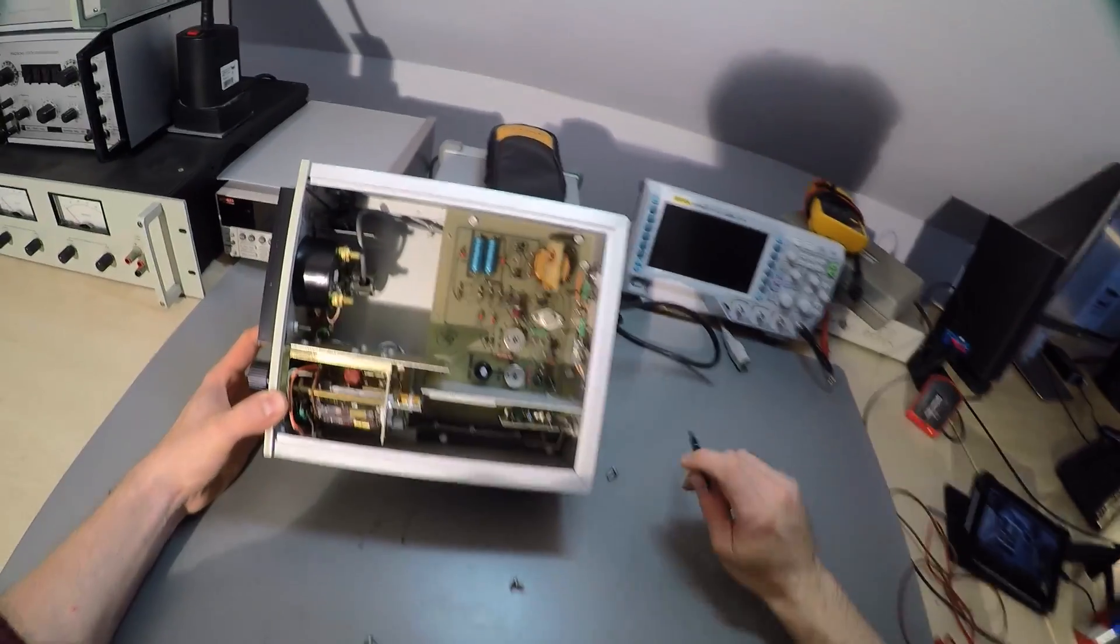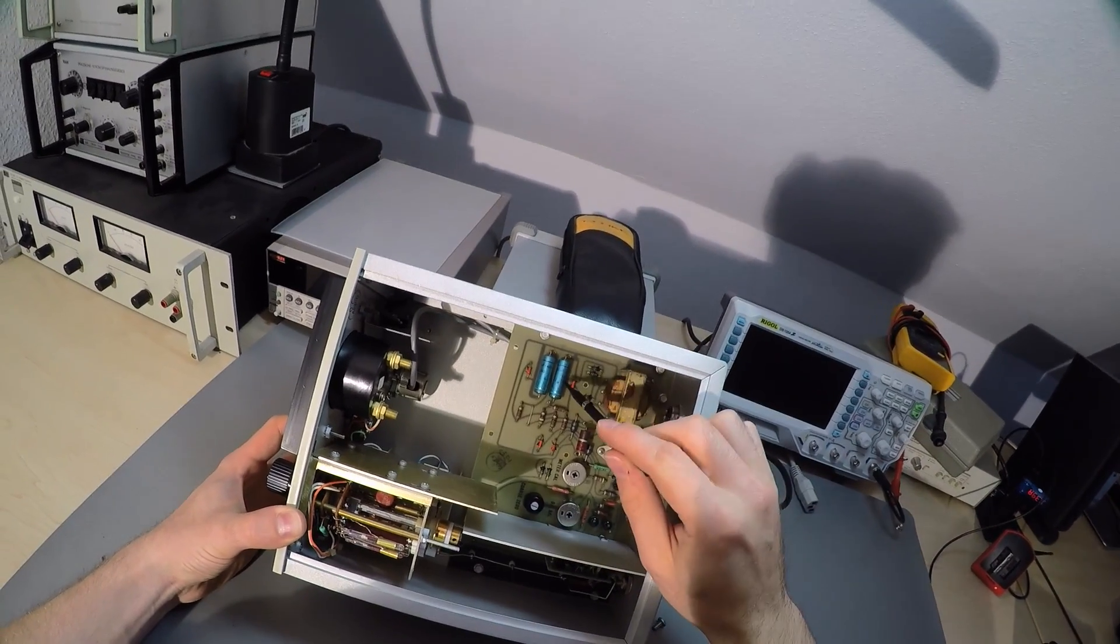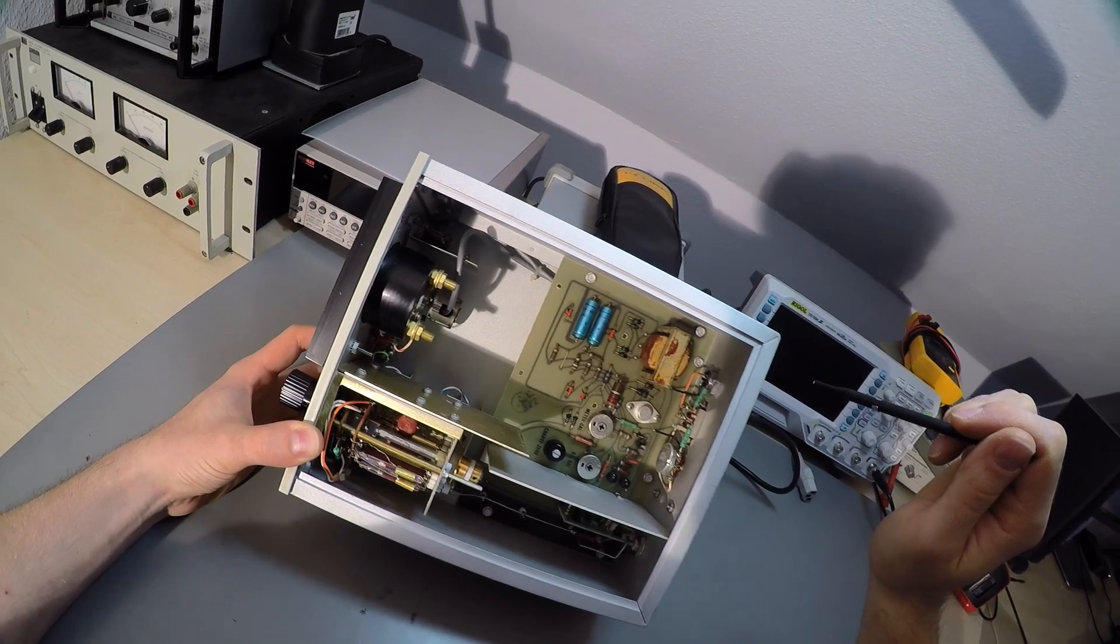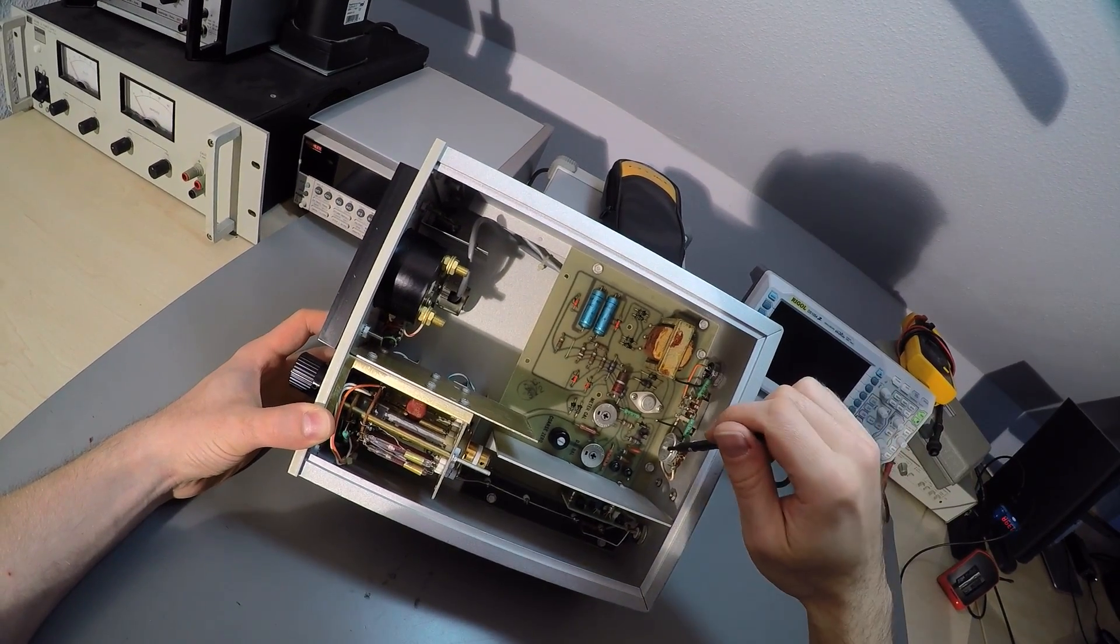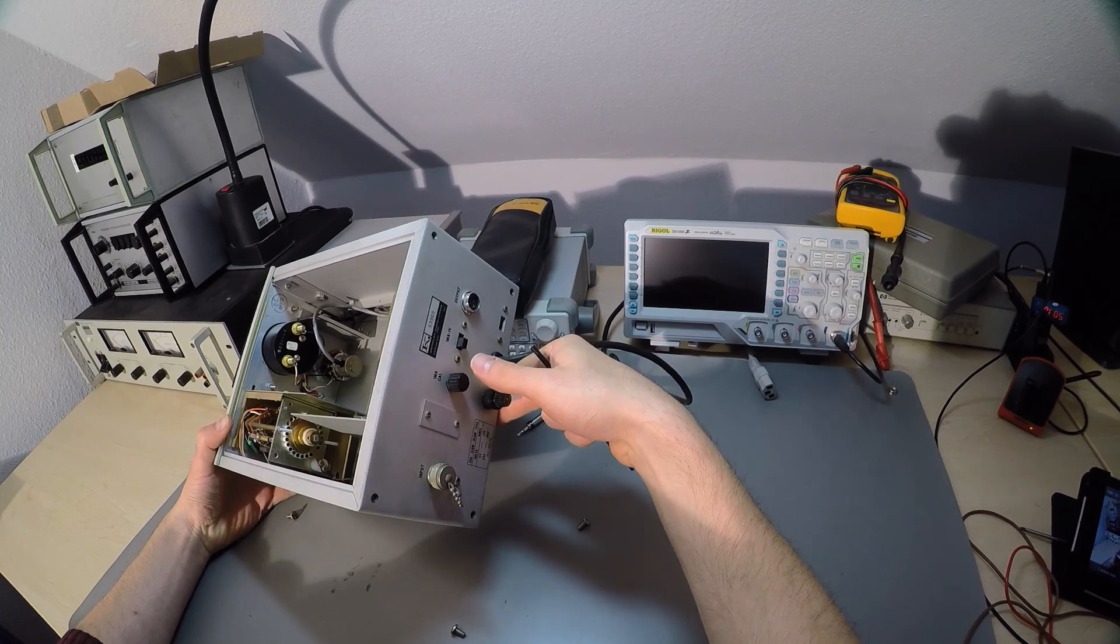In the upper right corner there is all the power supply business happening. If you have a broken unit you can check the manual online. There are a lot of voltages printed in there that you can check as a first step.